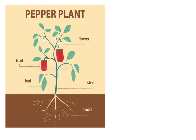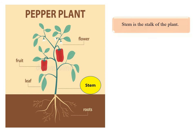Have a look at this picture. This picture is showing you the different parts of an ideal plant. A typical plant can be divided into two major parts: one is root and another is the shoot. The root is usually underground, and the part we see above the ground is called the shoot. The shoot consists of stem, leaves, flowers and fruits.